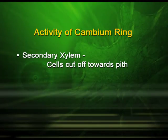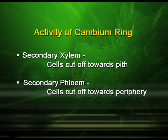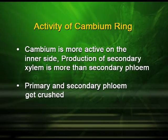Regarding the activity of the cambium ring: the secondary xylem is actually the cells which are cut off towards the pith. The cells which are cut off towards the periphery are called the secondary phloem. The cambium is more active on the inner side, so the production of secondary xylem is more than the secondary phloem. It is because of the growth of the secondary xylem that the primary and secondary phloem get crushed.